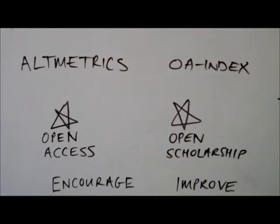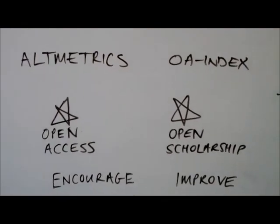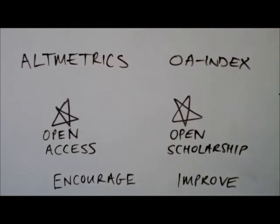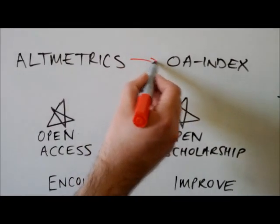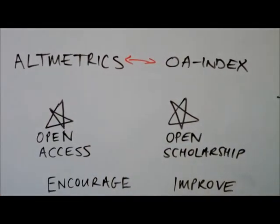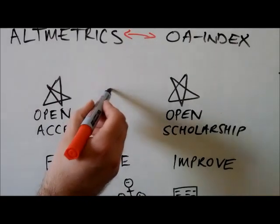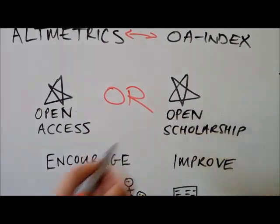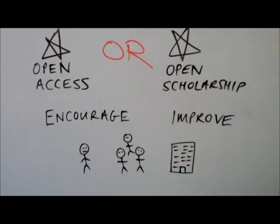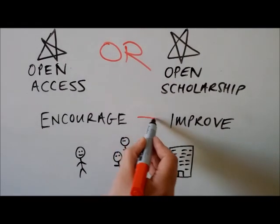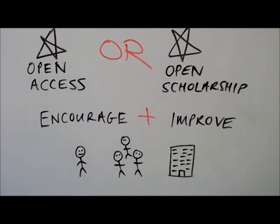This in turn could lead us to ask new questions such as, is there a link between someone's altmetric score and their OA index? Should we just be putting a score on open access engagement or the wider area of open scholarship? How could a score such as this be used to encourage engagement with open access or to help an individual to identify easy steps to improve their OA index?